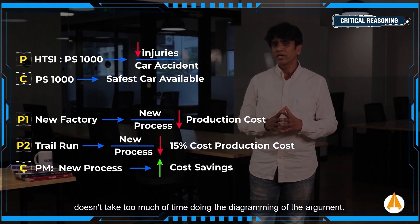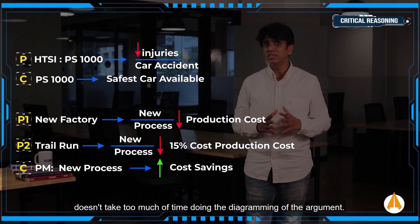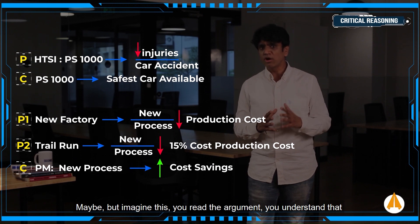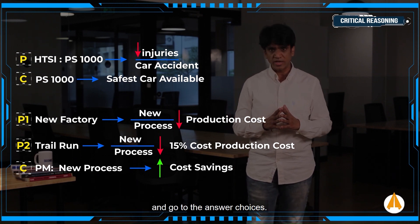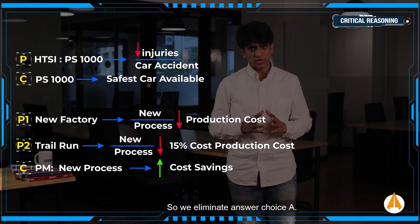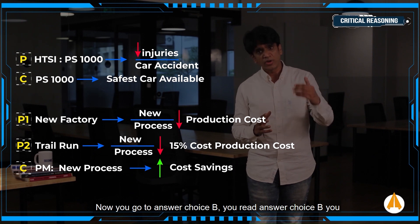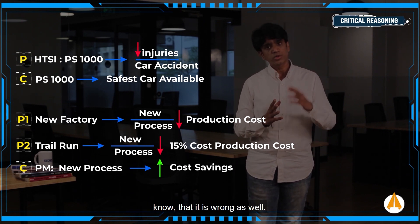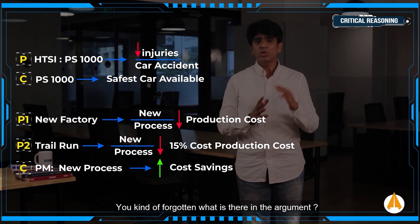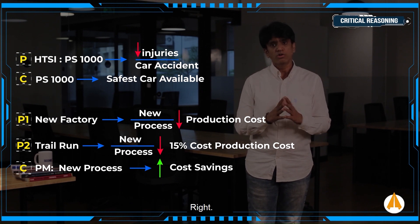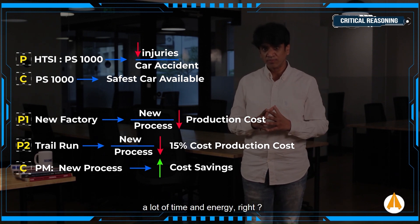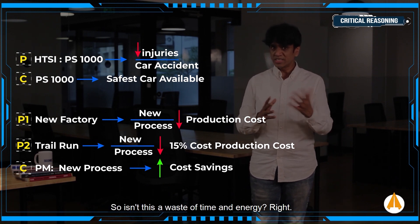You may say, doesn't it take too much time doing the diagramming of the argument? Maybe, but imagine this: you read the argument, you understand it and go to the answer choices. You read answer choice A, you know it is wrong, so you eliminate it. You go to answer choice B, read it, know it is wrong, and eliminate it. By the time you go to answer choice C, you have kind of forgotten what is in the argument. So you go back and forth between the argument and the answer choices, spending a lot of time and energy. Isn't this a waste of time and energy?